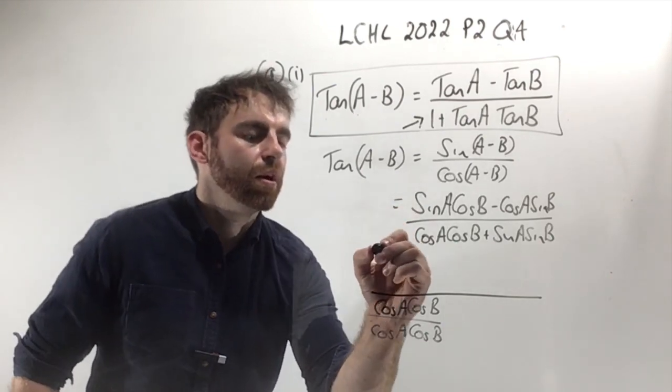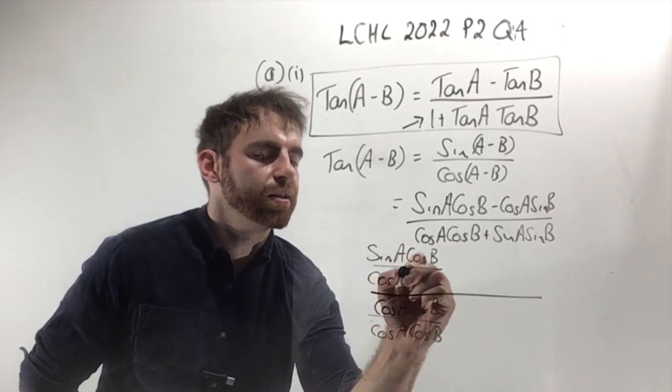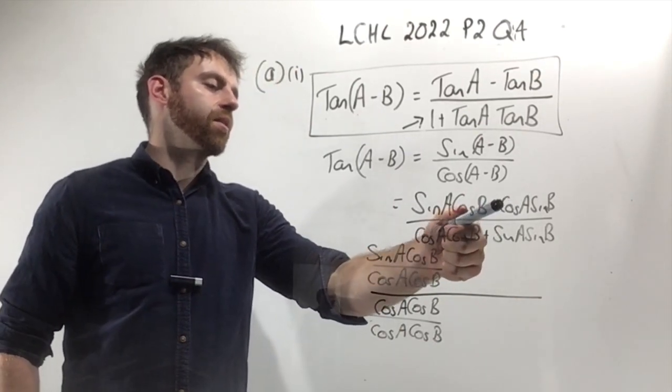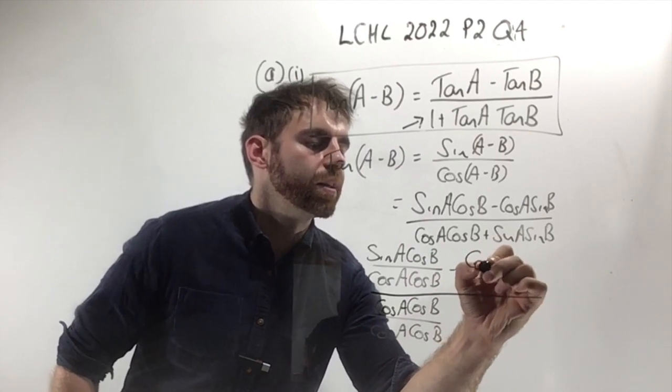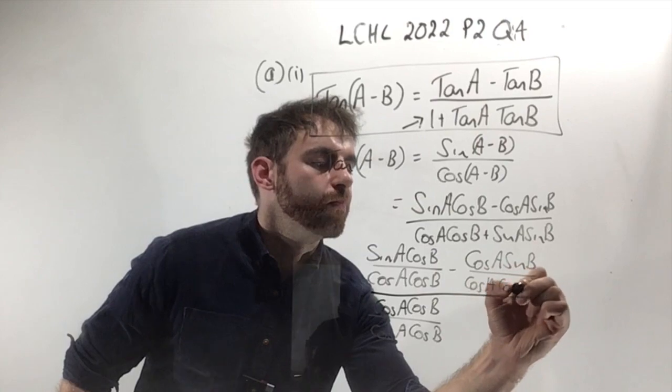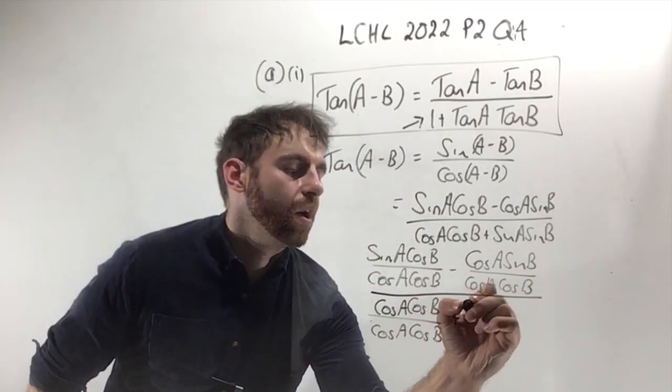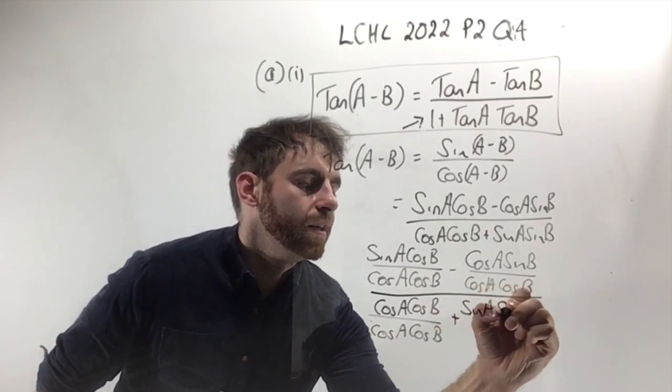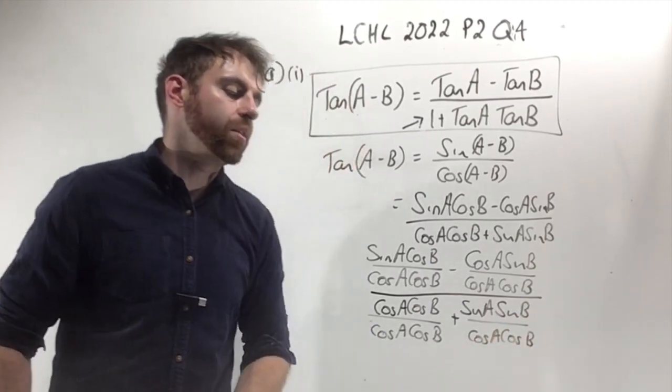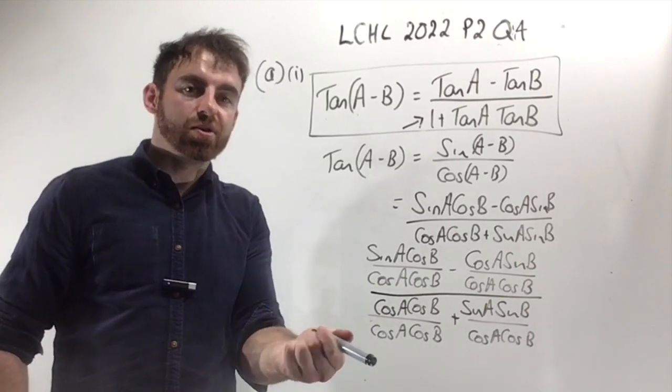I'm going to take the other three terms in the fraction and divide them all by cos A cos B. Sine A cos B divided by cos A cos B. Minus cos A sine B divided by cos A cos B. And sine A sine B divided by cos A cos B. And now it's just about to fall into place. Cos A cos B over cos A cos B is just 1.